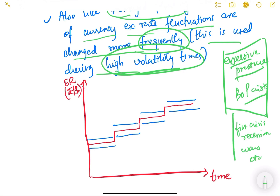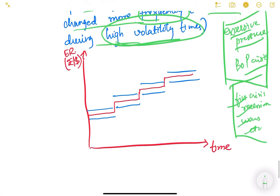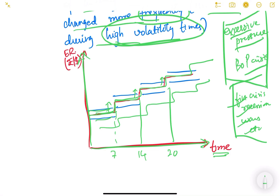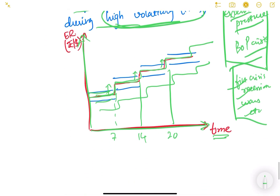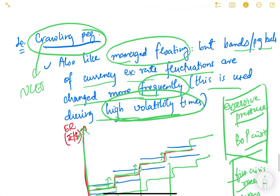Crawling pegs are used during high volatility periods such as financial crises, recessions, or wars. During these times, the Reserve Bank of India or any monetary authority has to change the peg very frequently and be very active in the market. On a graph with time on the x-axis, the exchange rate is devalued and the bands redefined every seven days or so — giving a staircase-like crawling pattern. This crawling peg topic is not in the NCERT textbooks but is provided here for additional knowledge.